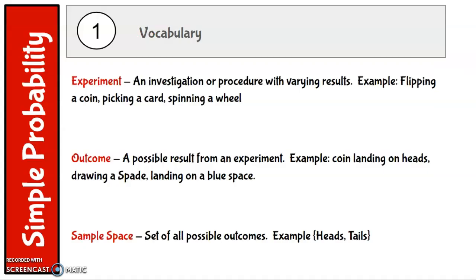First, some vocabulary. An experiment, when we're talking about probability, is an investigation or procedure with varying results. Examples might be flipping a coin, picking a card out of the deck, spinning a wheel. That's an experiment.